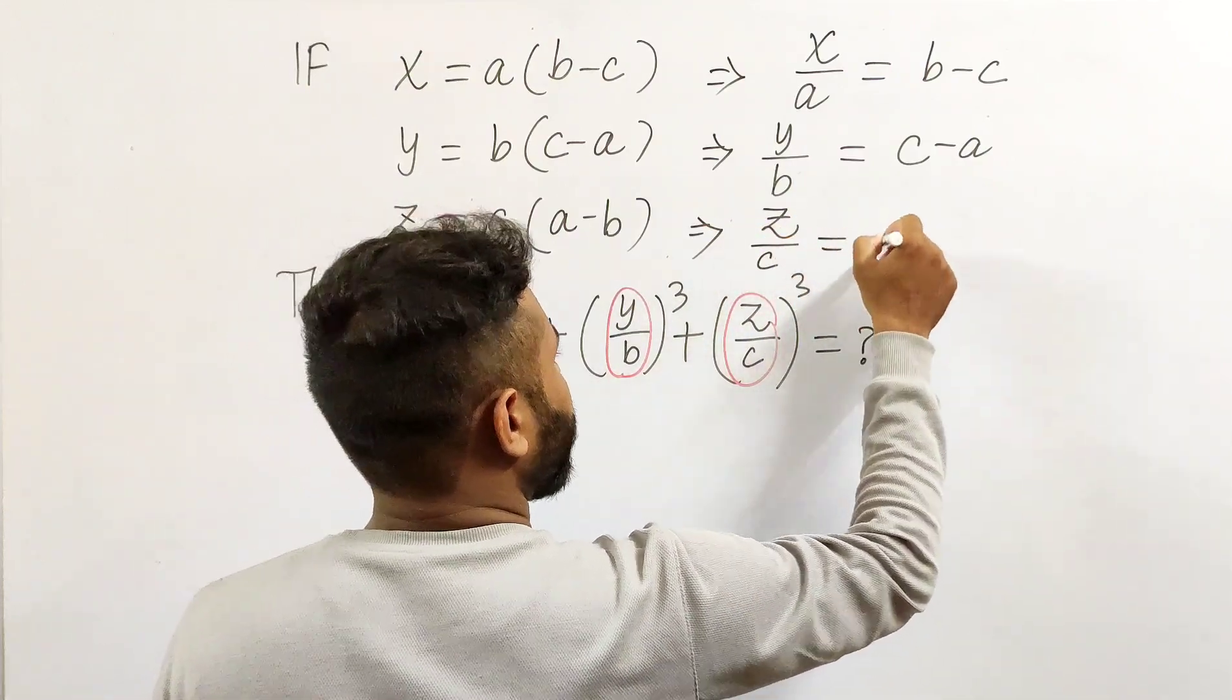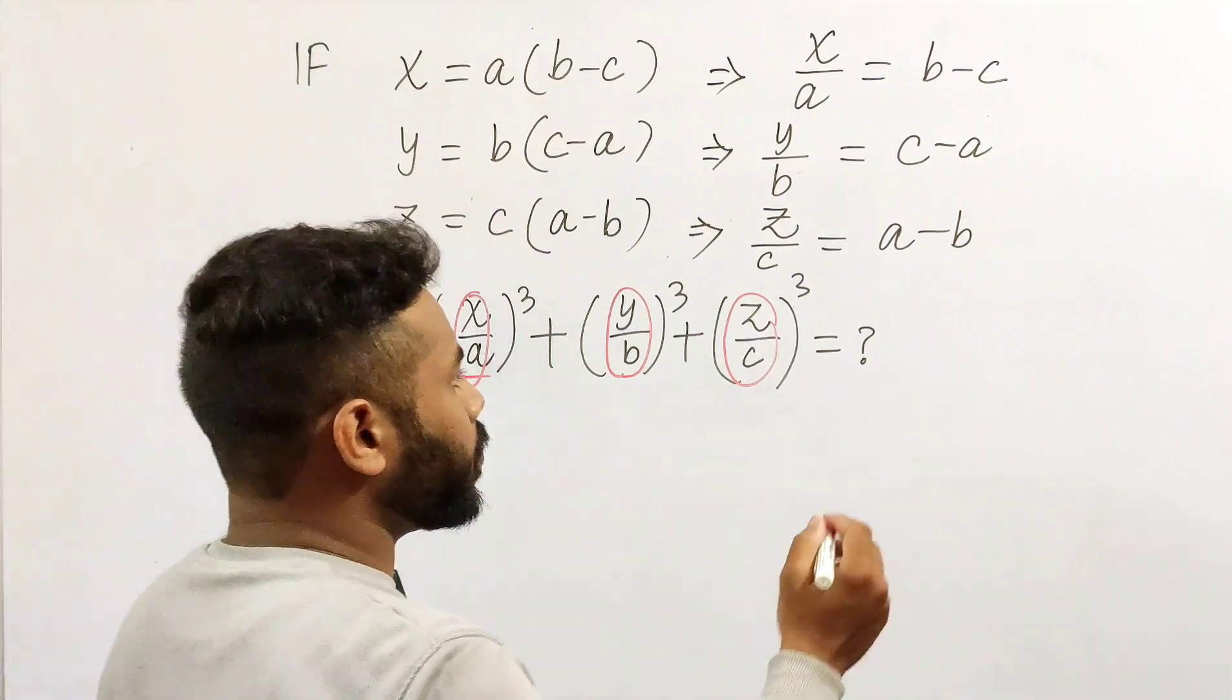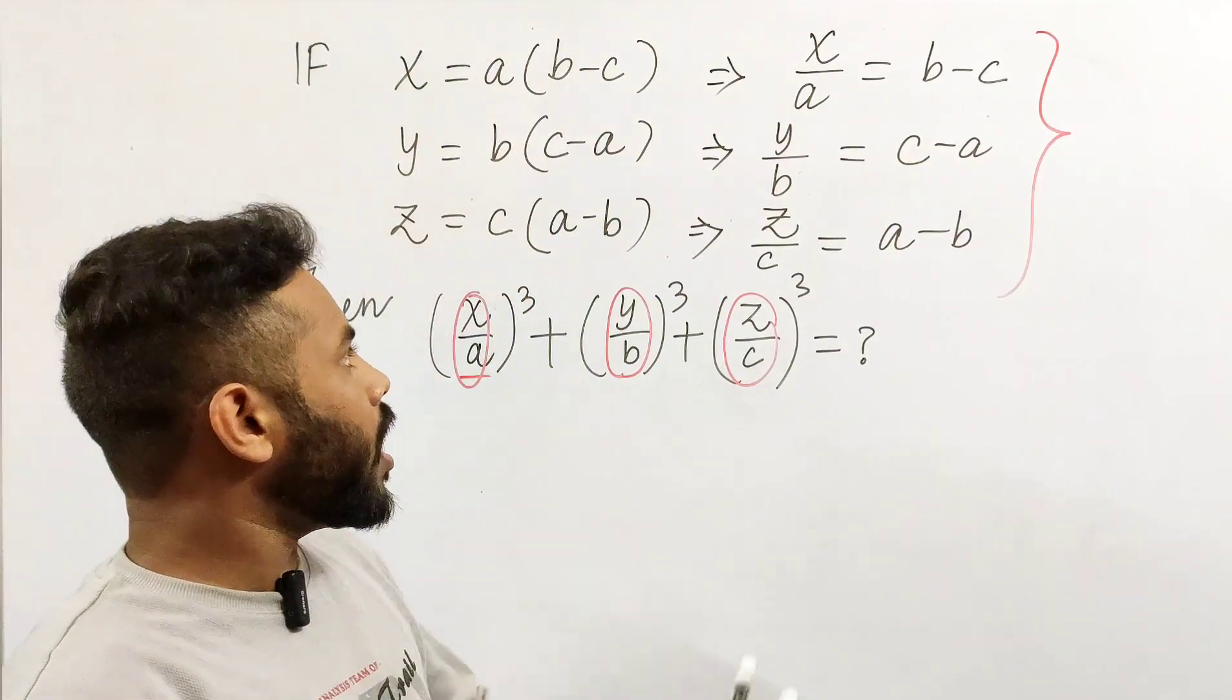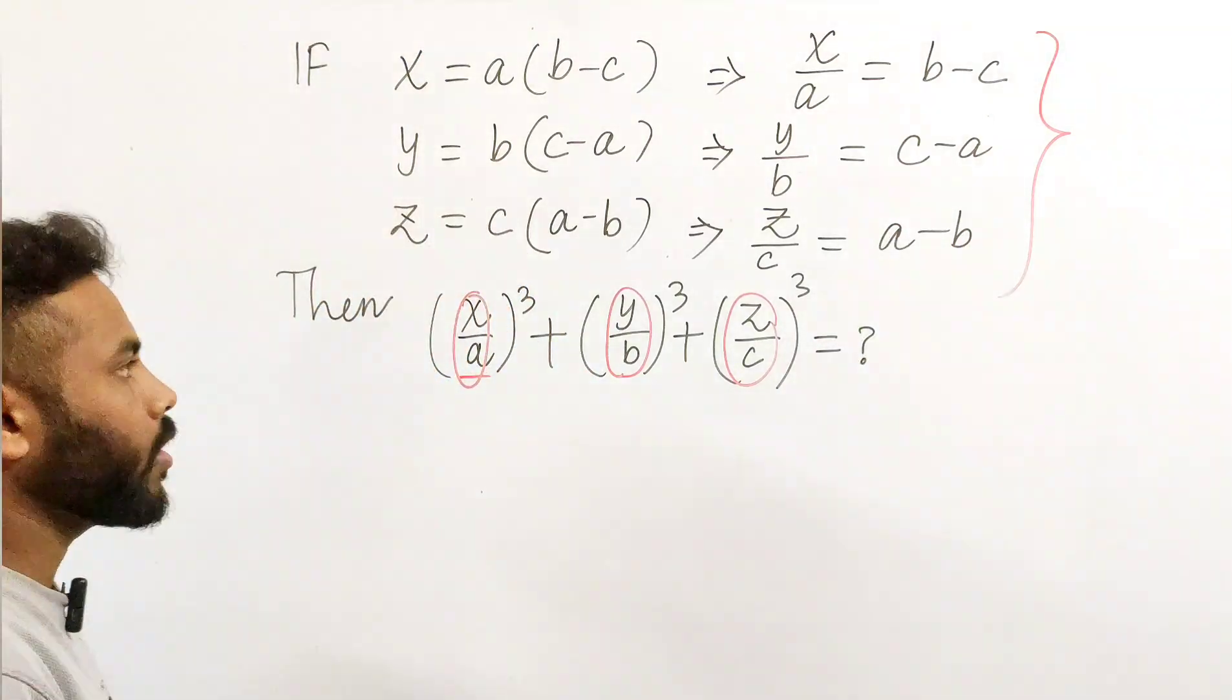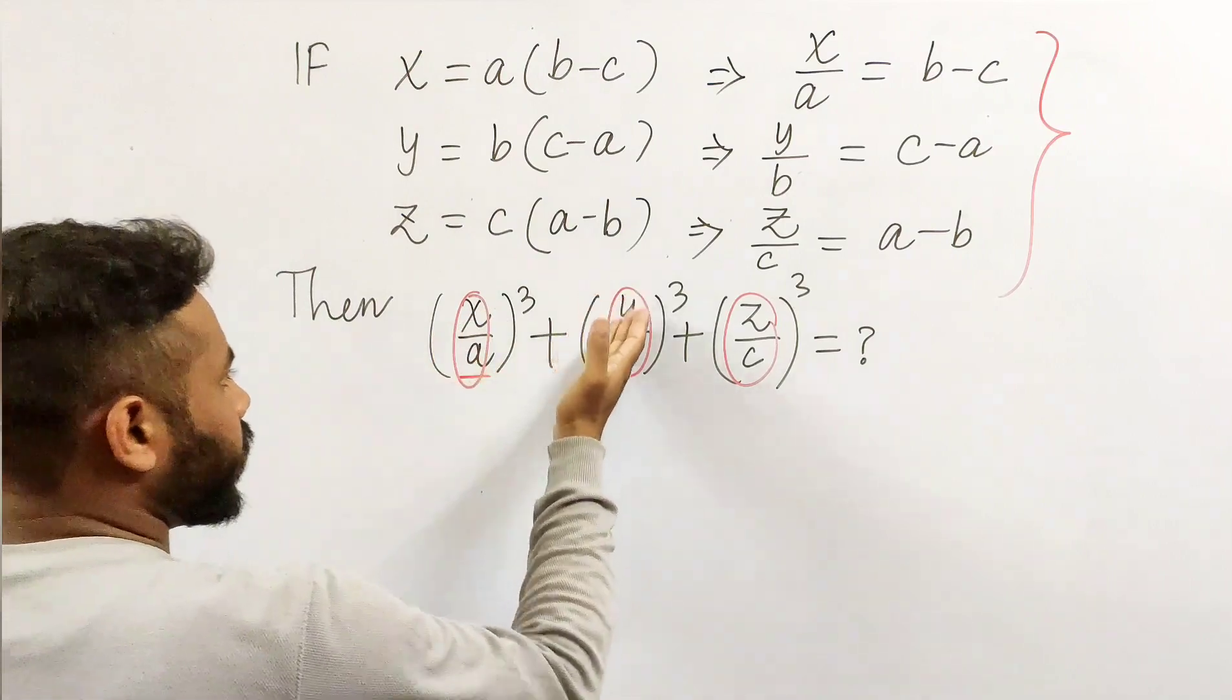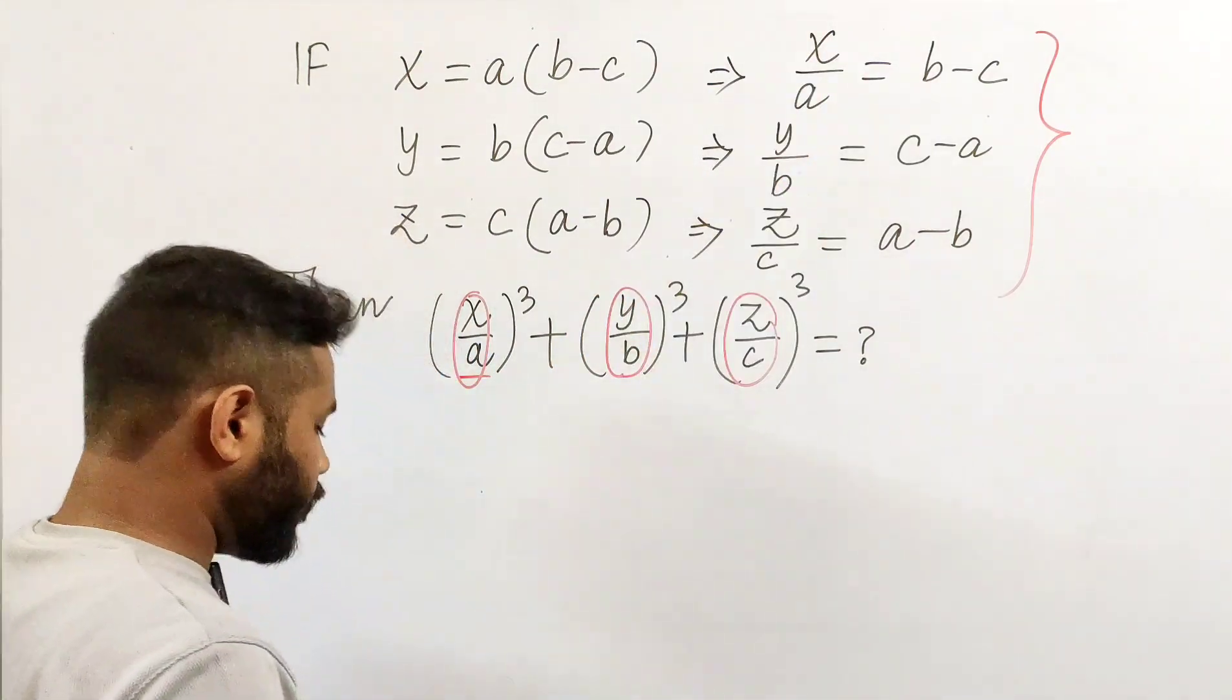Here the main point is the observation. If you see here, if I add these three equations, then all this expression will be zero. Why are we going to add? Because you see here, this is x by a, y by b, and z by c. So I have reformed in this way, right?